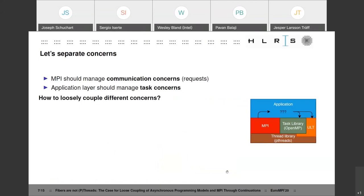How can we do better? Let's separate concerns here. MPI should manage communication concerns. As it does that already, it manages all the communication, of course. It allocates requests, hands out these requests to the application and takes them back eventually. These requests represent arbitrary operations that are managed by MPI. The application layer should manage tasking concerns. So the application is programmed using some form of task abstraction or higher level concurrency abstraction, and it should be the application's task to manage that. And the question is how can we loosely couple these different concerns.